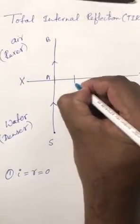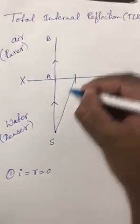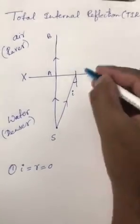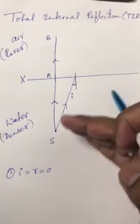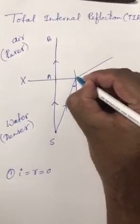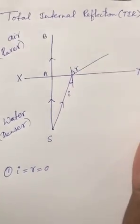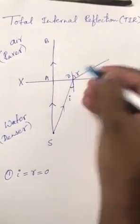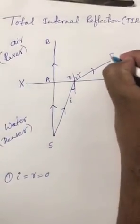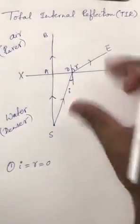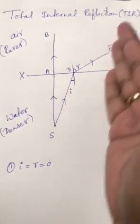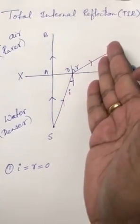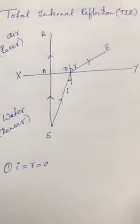In the second case, I will bend the incident light ray and it will come and hit the normal at an angle I, called the angle of incidence. Since light travels from denser media to rarer media, it will go away from the normal. R is the angle of refraction. SD is the incident light ray and DE is the refracted light ray. There is a change in the path of light because there is a change in the speed of light.